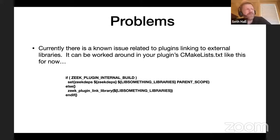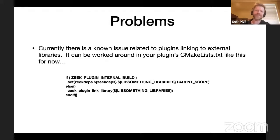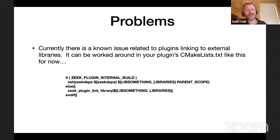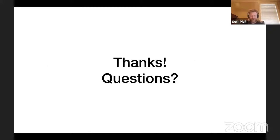There is a known bug: if a plugin uses an external shared object library, it currently does not link correctly when built as a static plugin. Seth provides a workaround in the `CMakeLists.txt` file for Zeek 4.1 and hopes to get it fixed in an upcoming release, though it may not land until Zeek 5. With that, Seth notes he's hit his time limit and is happy to stick around for questions.